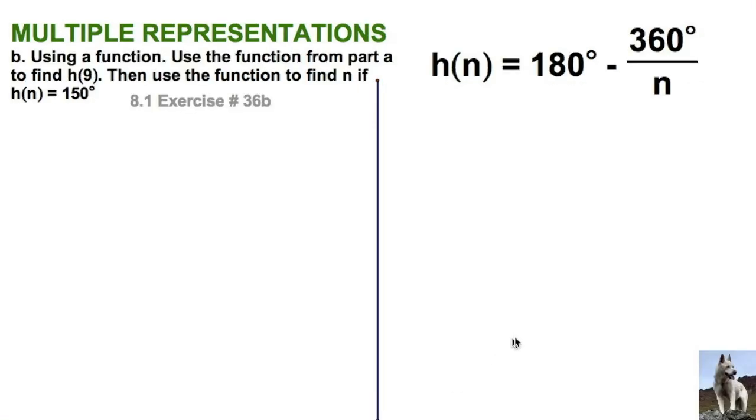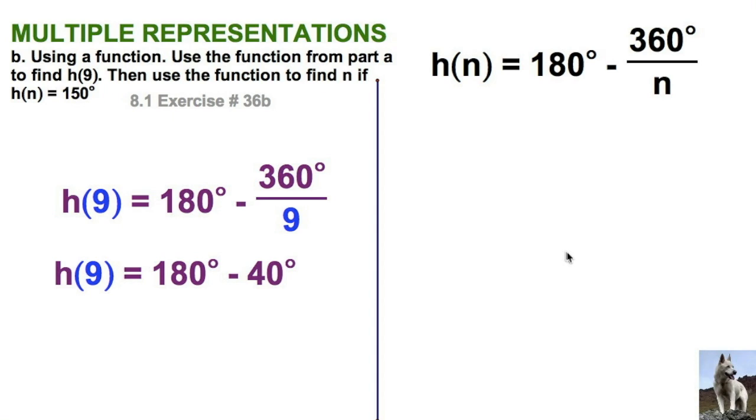Now part b says, can we find h of 9? In other words, what's the value of the function? We haven't talked about functions much since algebra one, so we're just going to input that as our variable. The exterior angle is going to be 40, and that means each interior angle would be 140. So h of 9, the function evaluated at n equals 9, equals 140 degrees.